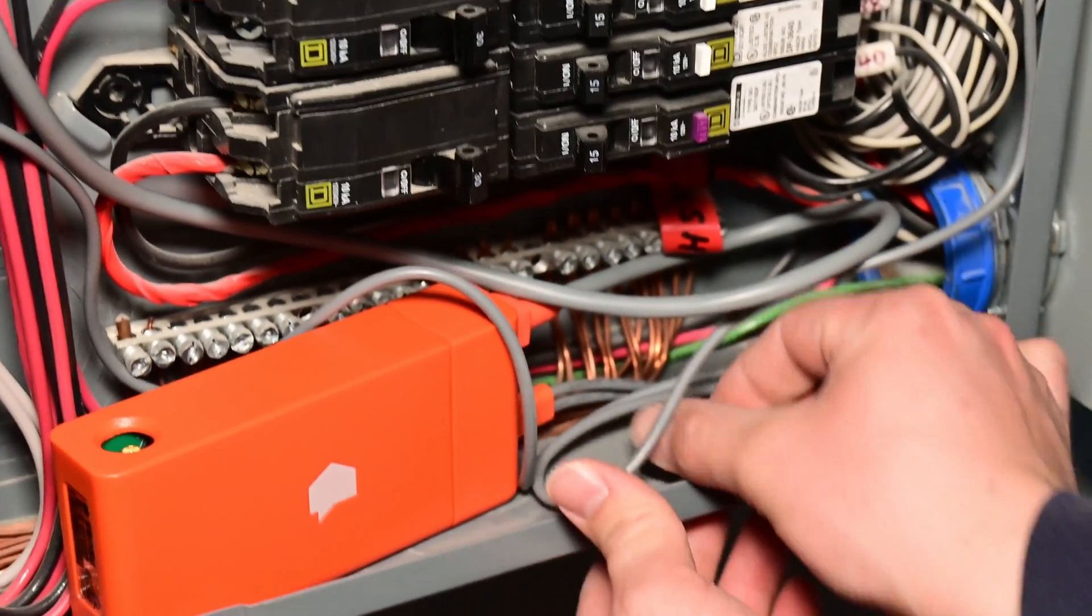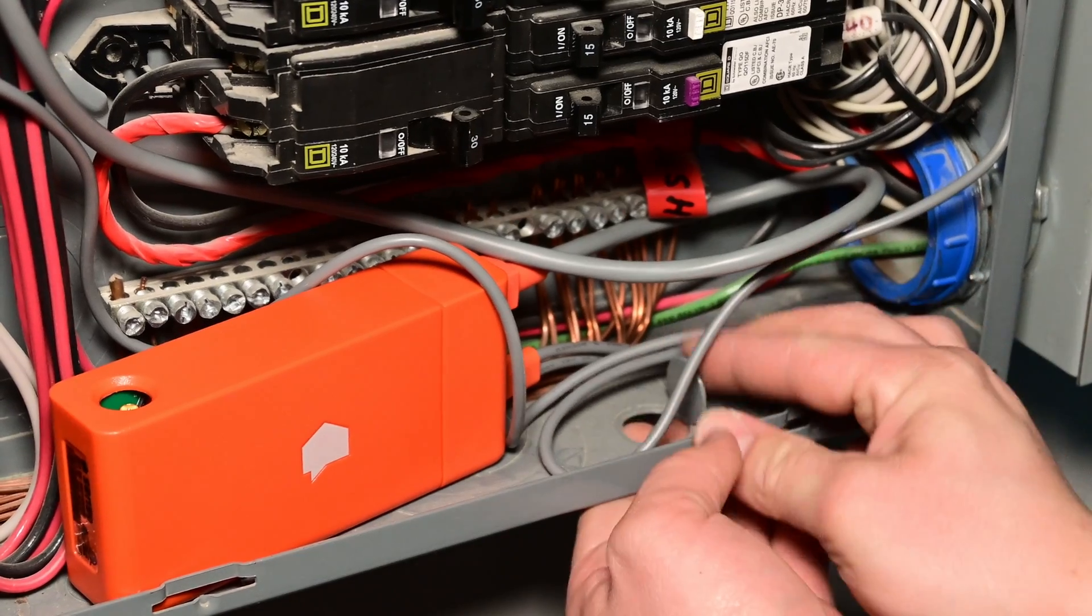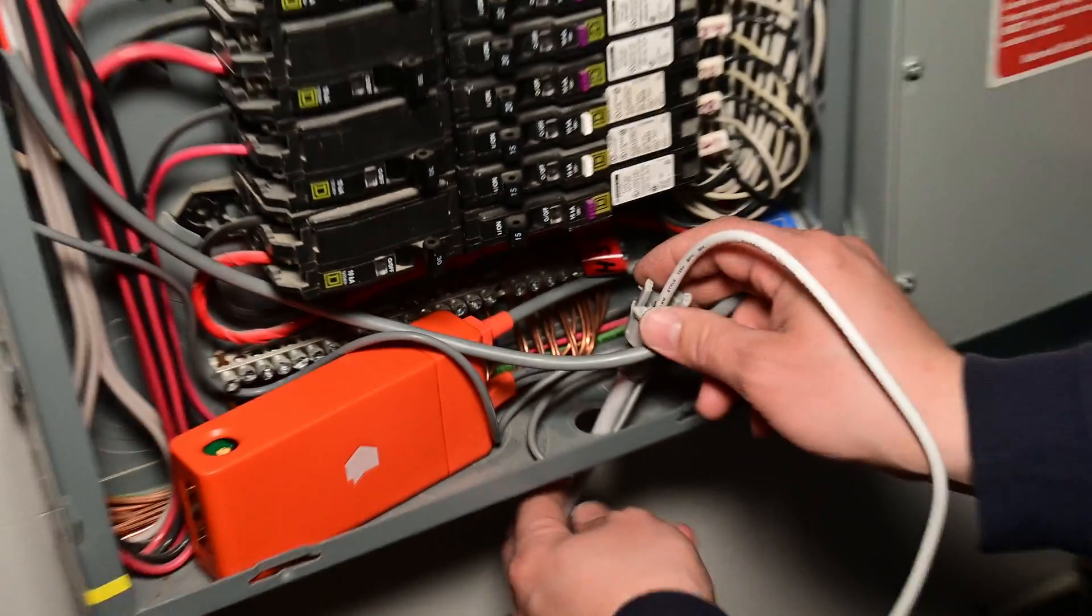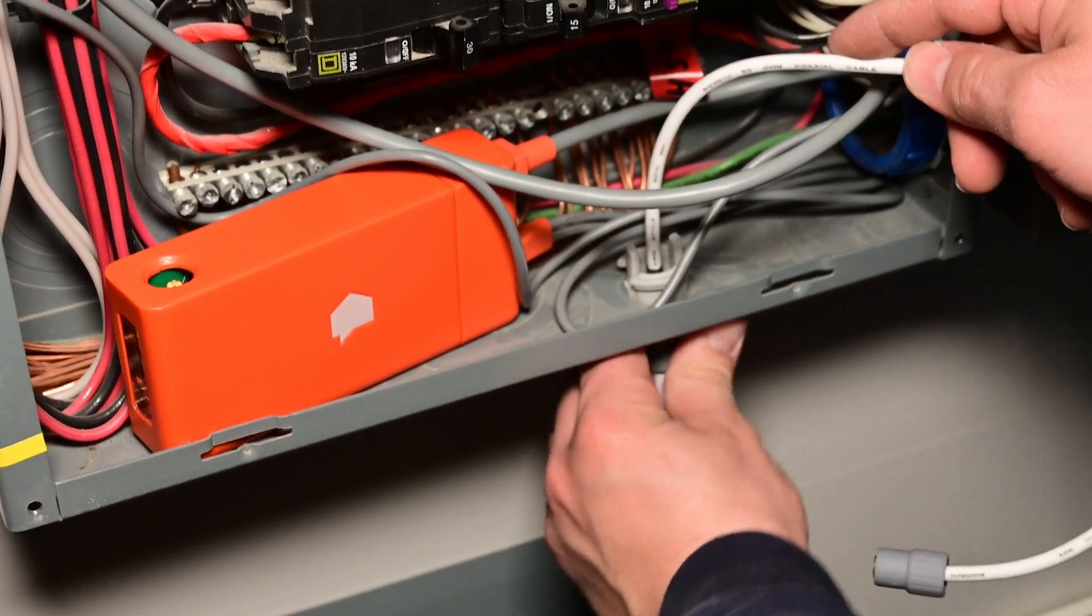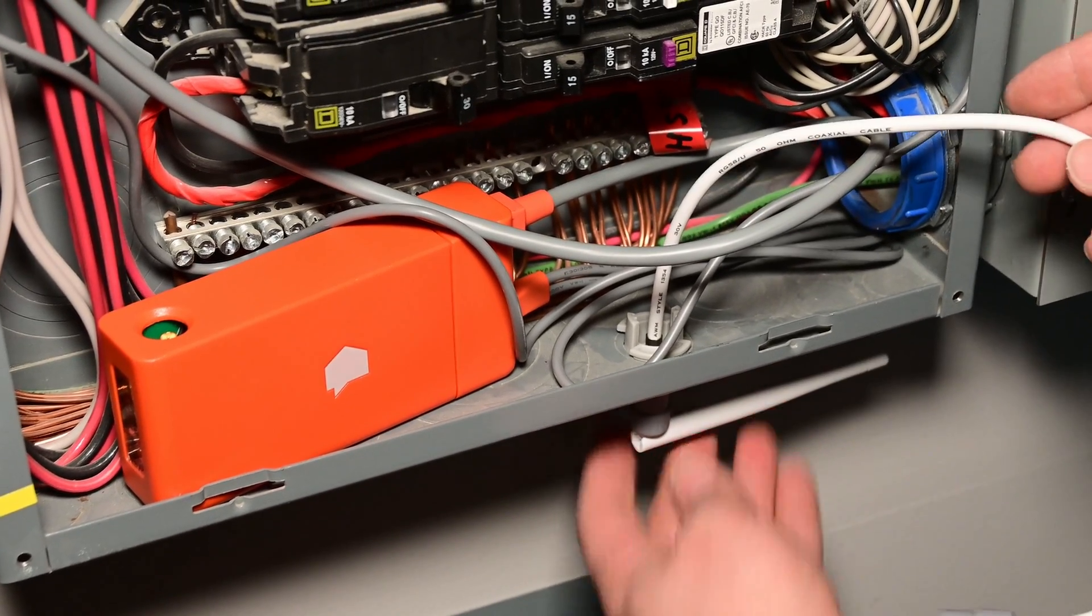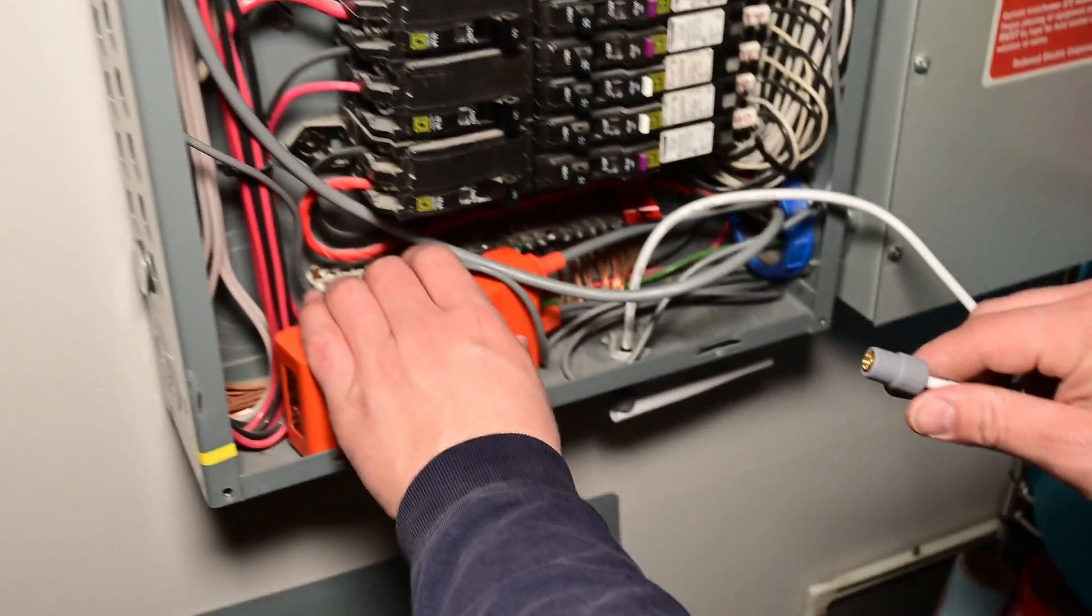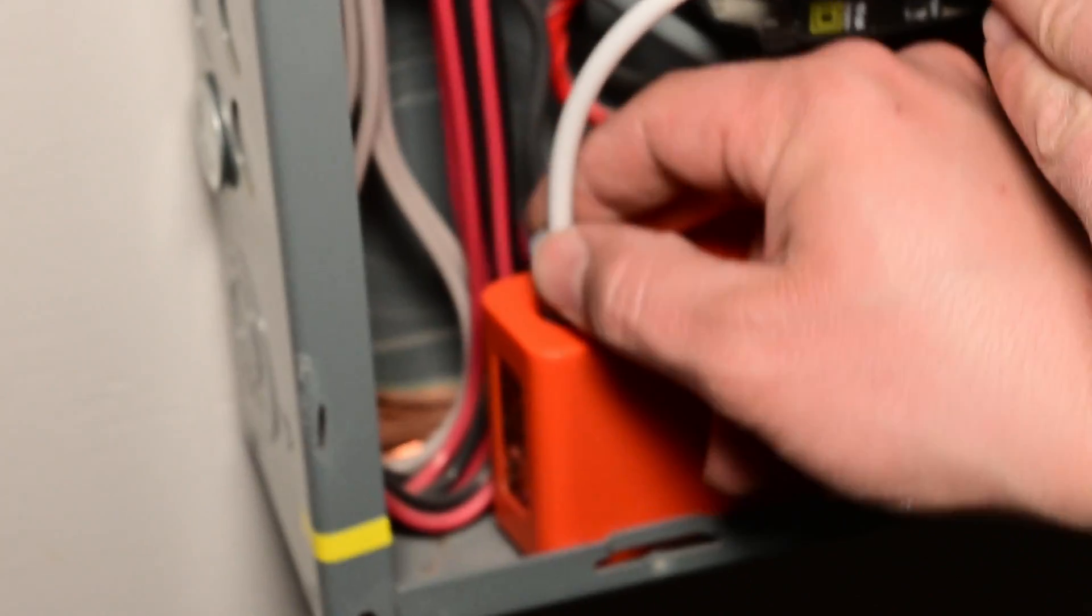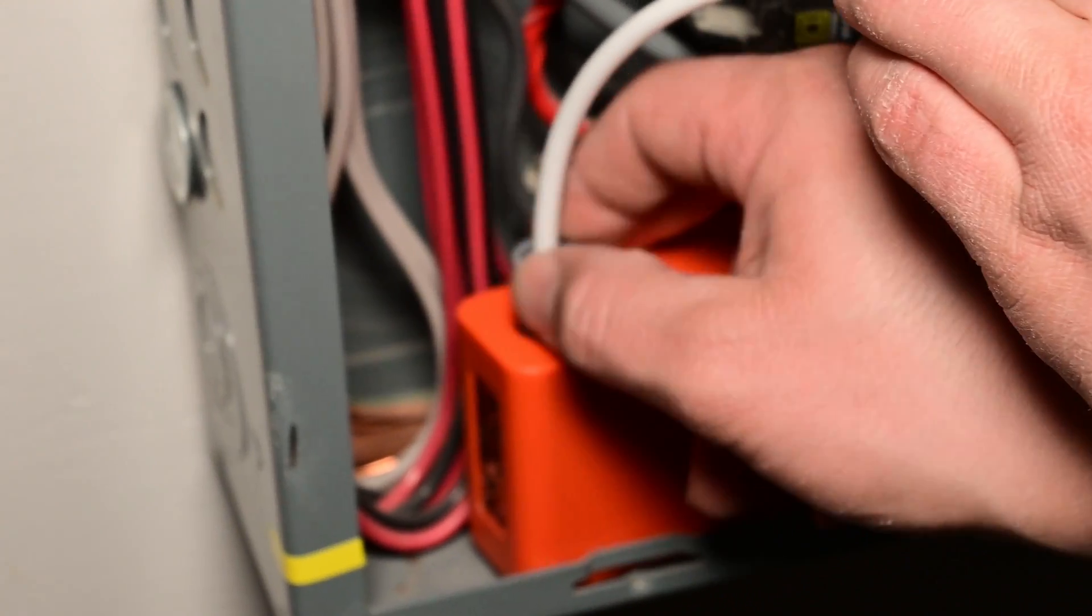And I am actually just going to open this knockout right here in the bottom because it happens to be right next to where the energy monitor is located. Attach the antenna to the extension cable and take the extension cable and pull it through the one-half-inch knockout that we just opened, and it'll snap into place. Then you can bend that antenna the direction that you want that's the most out of the way. Now we take the opposite end of our antenna cable and then plug it into the antenna port.